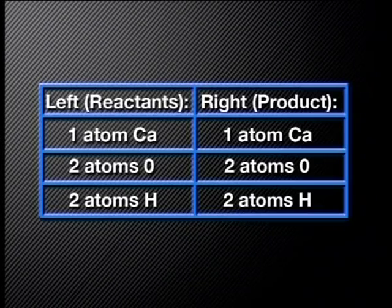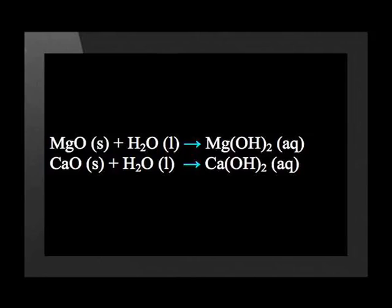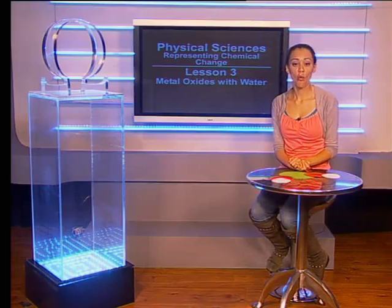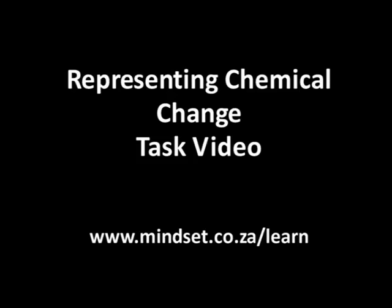Can you see the pattern in the chemical equations we have written? MgO plus H₂O reacts to form Mg(OH)₂, and CaO plus H₂O reacts to form Ca(OH)₂. Elements from the same group react in the same way. You now know that metal hydroxides form when metal oxides from Group 1 and Group 2 metals react with water. Don't forget to go to the task video on representing chemical change and visit the Mindset website at www.mindset.co.za/learn. Join us next time when we look at the reactions of metals with water and acids. Until then, goodbye.